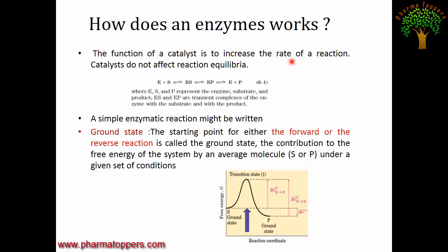The function of an enzyme is to increase the rate of reaction. The reaction proceeds as: enzyme (E) + substrate (S) forms an enzyme-substrate (ES) complex intermediate, which then forms an enzyme-product (EP) intermediate. The enzyme is then released and binds to another substrate as the cycle continues. The starting point from which the reaction begins — either forward or reverse — is called the ground state.